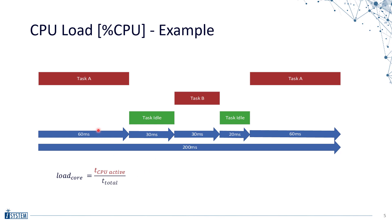The time is 60 plus 30 plus 60 milliseconds which is 150 milliseconds. The total time is 200 milliseconds and the milliseconds cancel out and we get a load of 75%. Alternatively we could have calculated the idle time, 30 plus 50 plus 20 is 50, and one minus that is of course again 75%.